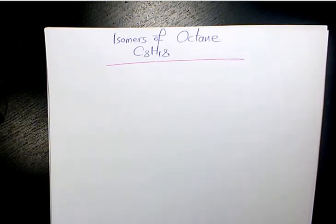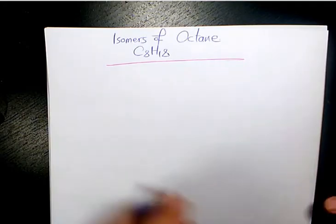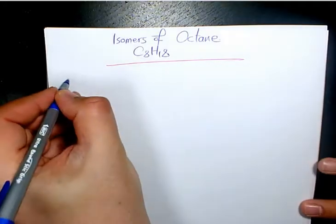What's up guys, this is Massey, welcome to another video. In this video I want to show you the isomers of octane. Octane is C8H18 and we have 18 structural isomers for octane.